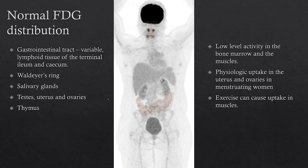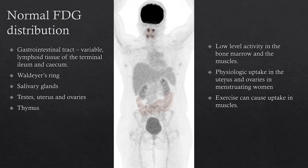Other normal distribution in the gastrointestinal tract can show variable uptake. You can see normal prominent uptake in the lymphoid tissue of the terminal ileum and cecum — when looking at colorectal cancer, it's important not to call that malignancy. If patients with diabetes are taking metformin, you can see prominent uptake in the intestines. You can also see uptake in Waldeyer's ring, salivary glands, testes, uterus, ovaries, and the thymus in younger patients. For the uterus and ovaries, this is typically seen in menstruating women and is physiologic.